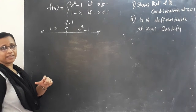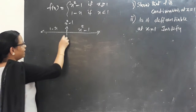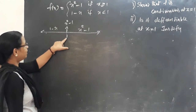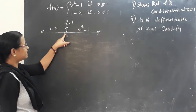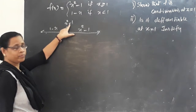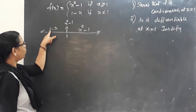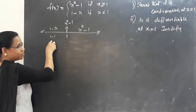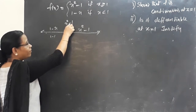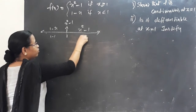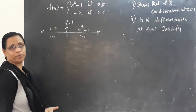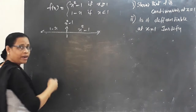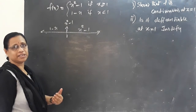Let's check continuity at the point x equals 1. We check the left-hand limit using the function 1 minus x, giving 1 minus 1 equals 0. The right-hand limit uses x squared minus 1, giving 1 squared minus 1 equals 0. Since LHL, RHL, and f(1) are all equal to 0, the function is continuous.